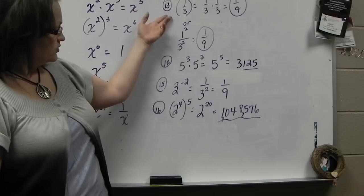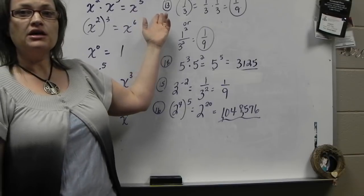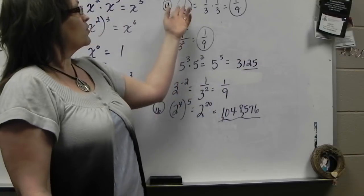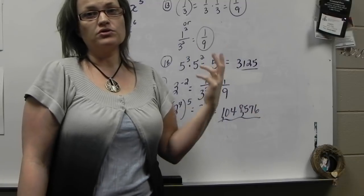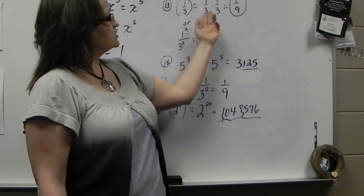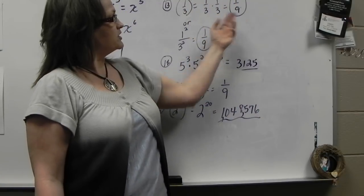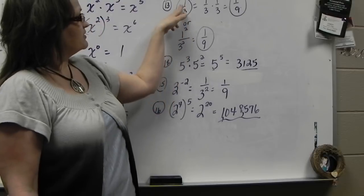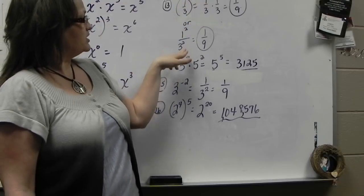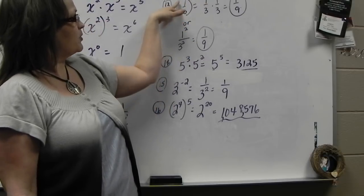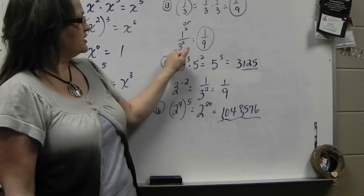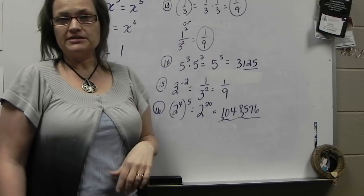Number 13 is just using an exponent with a fraction. 1 third squared means 1 third times 1 third, which is 1 ninth. Or you could think of it as 1 squared over 3 squared — both parts of the fraction get squared. 1 squared is still 1, and 3 squared is 9.